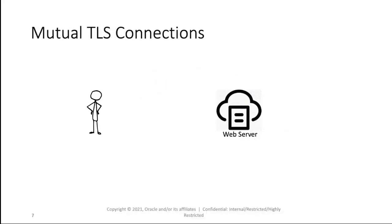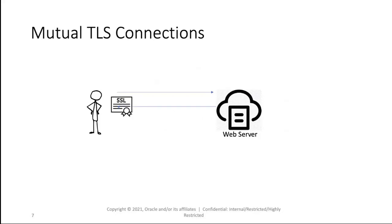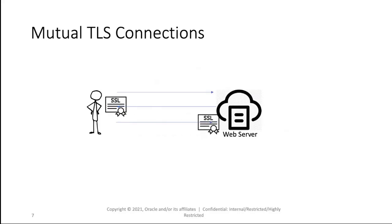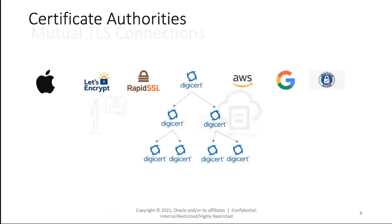For a mutual connection, it's the same type of situation where the certificate gets sent to the client. If the client trusts the certificate, then the client would send its certificate to the web server. And if the web server trusts that certificate, then your connection would be established.